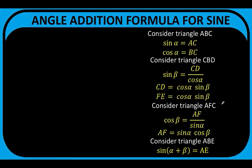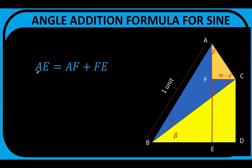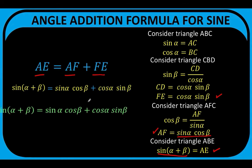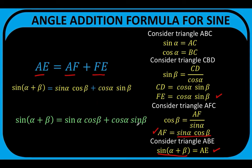Now let's summarize all these results. Based on our figure, the length of segment AE equals AF plus FE. We know that AE equals sine of alpha plus beta, AF equals sine alpha cosine beta, and FE equals cosine alpha sine beta. Therefore, sine of alpha plus beta equals sine alpha cosine beta plus cosine alpha sine beta. This result is exactly the identity we wanted to prove, and this completes our proof.